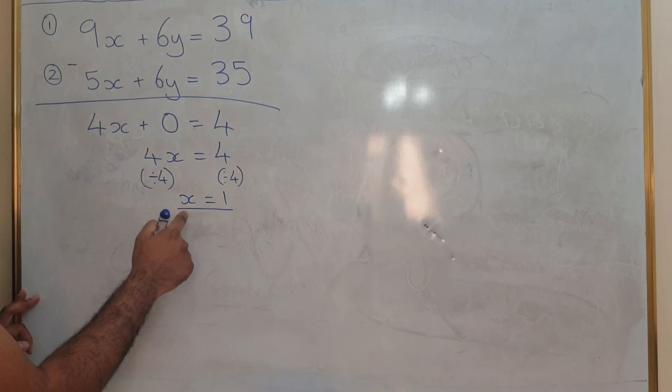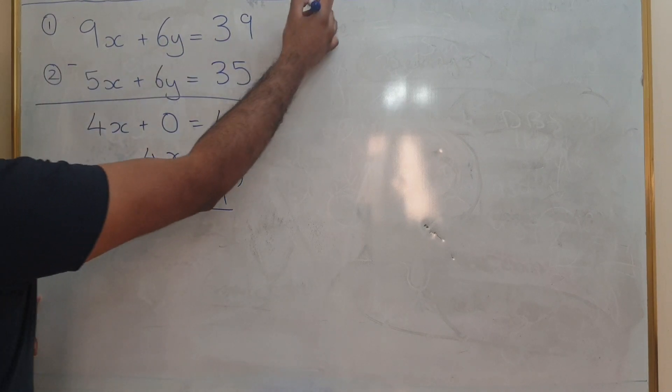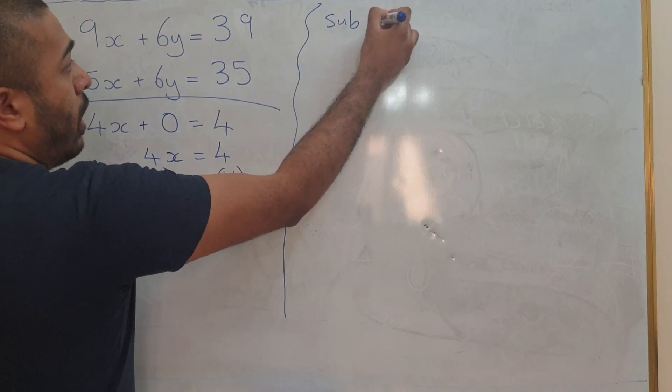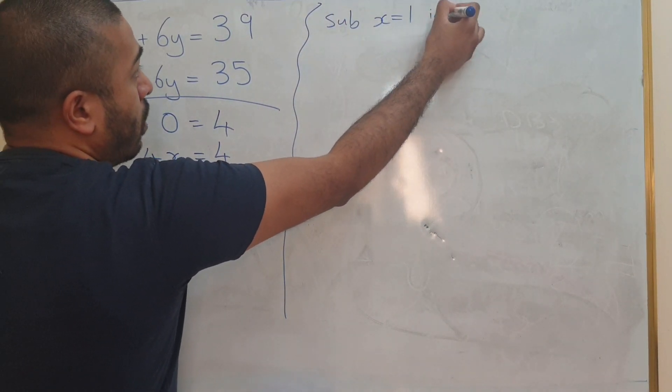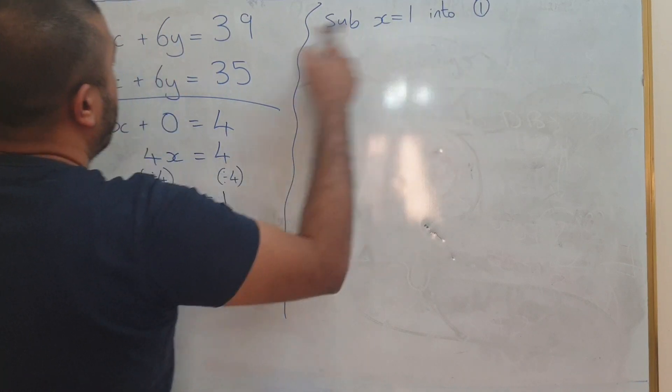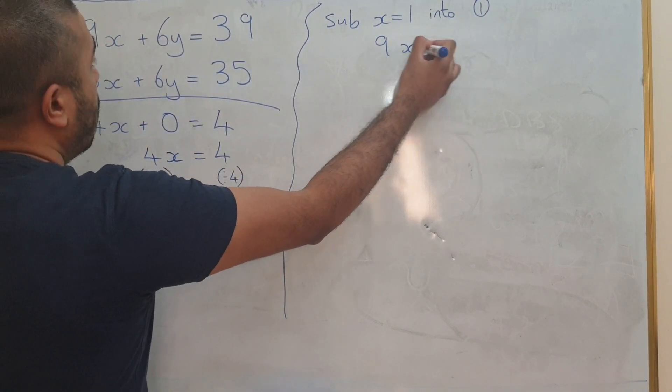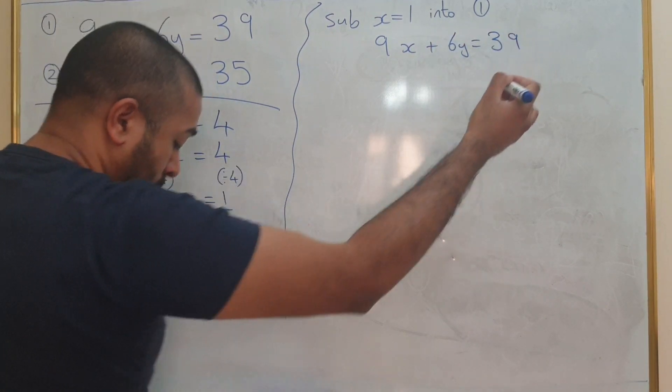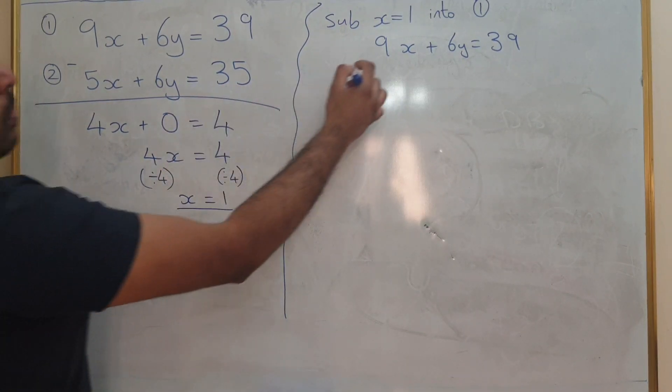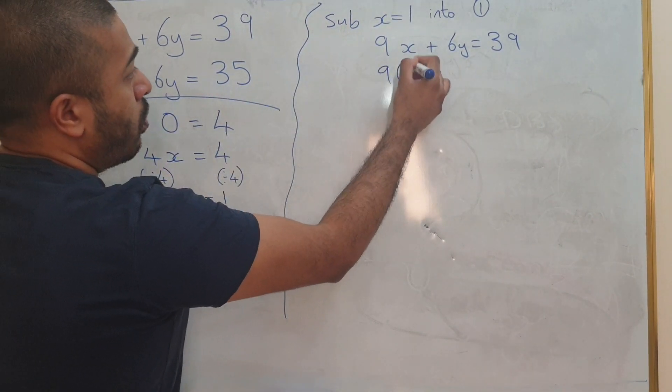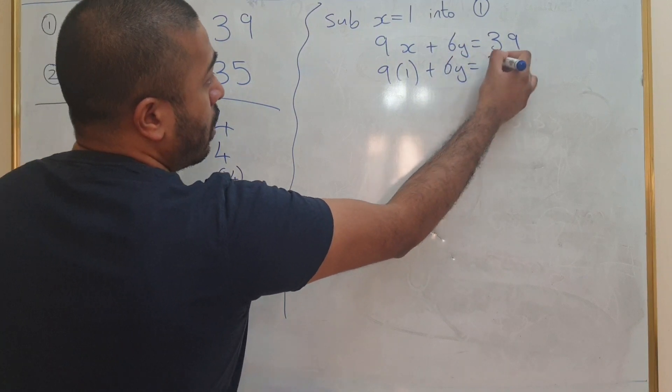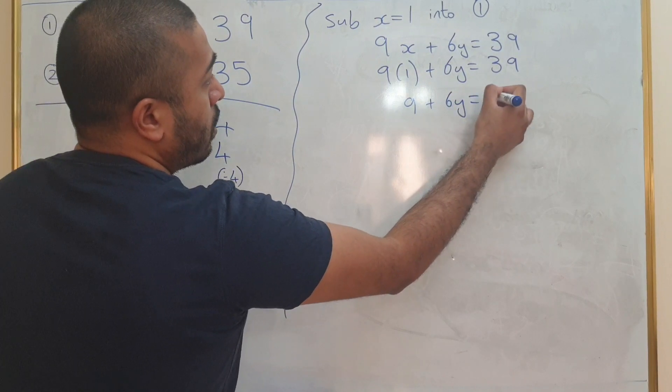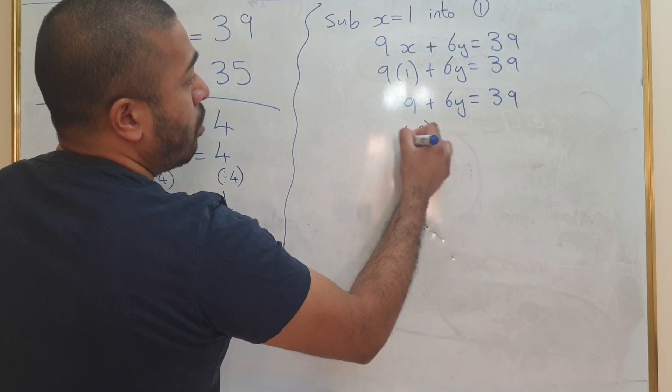We are now going to substitute this back into equation number 1. So x equals 1 into equation 1. So it's 9x plus 6y equals 39. That's 9 plus 6y equals 39. 9 plus 6y equals 39 minus 9 for both sides.